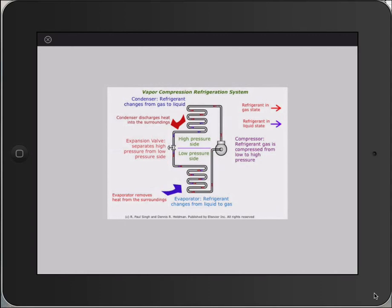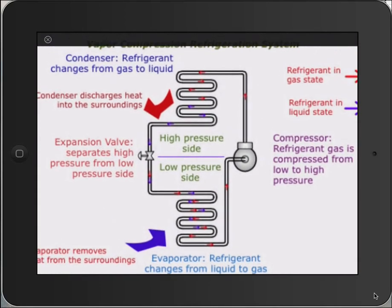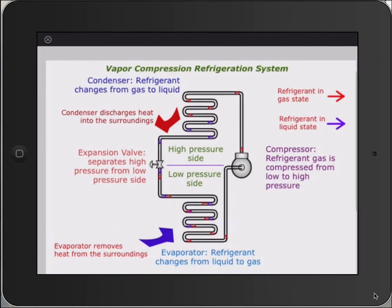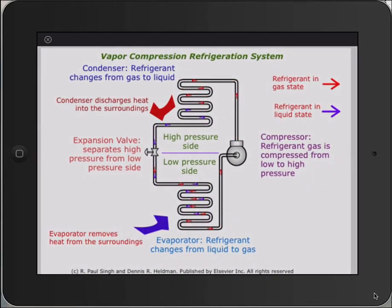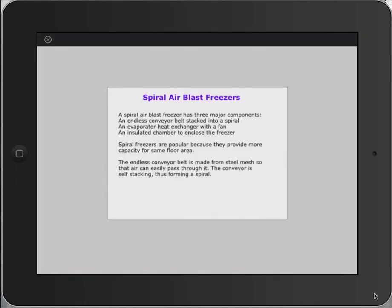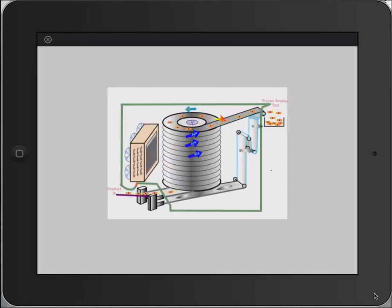Other animations are linked to various diagrams that help learn underlying concepts. Here we see how a refrigerant moves inside a refrigeration cycle. In this next figure of an air blast freezer, a spiral freezer is animated to show how food is frozen.